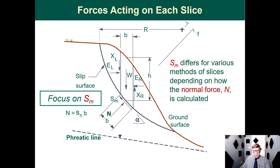Here is a slice through a sliding mass. On one slice in the middle I place a normal and a shear on each side — every time a plane is passed through a soil mass, you must put a shear and a normal on that plane. This free body diagram shows all of the forces that we can put on our problem. Our focus will be on the shear force mobilized, s_m, because s_m differs for different methods of stability analysis, since the normal force is calculated slightly differently for each method of slices.